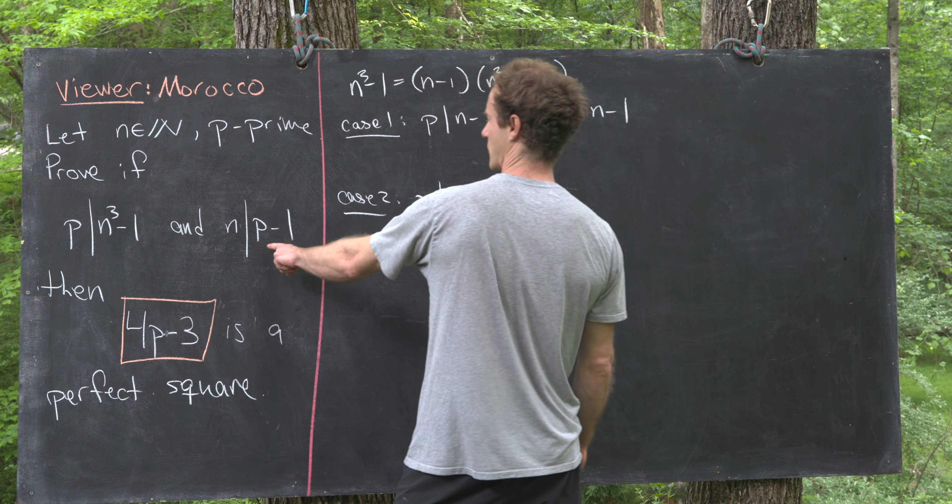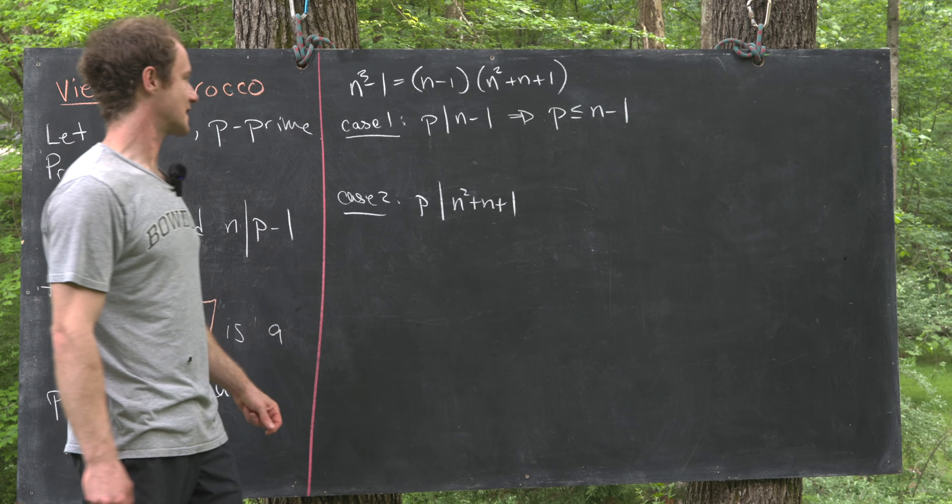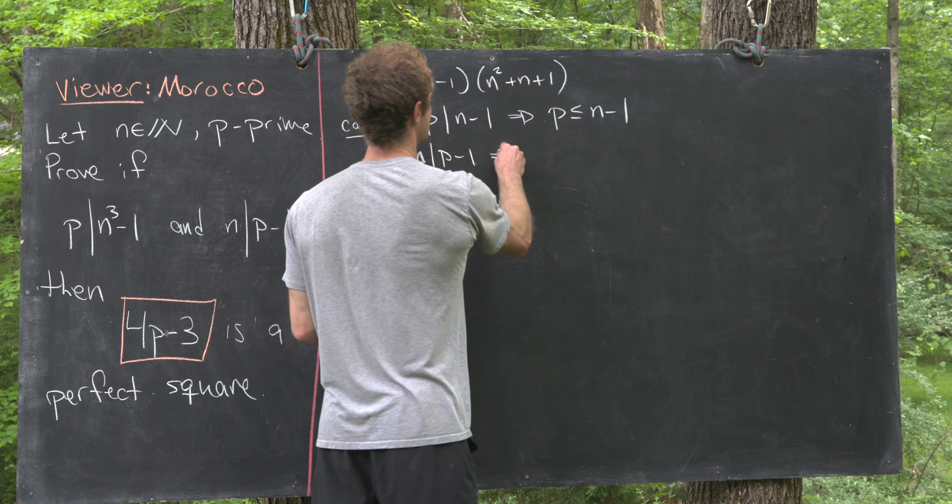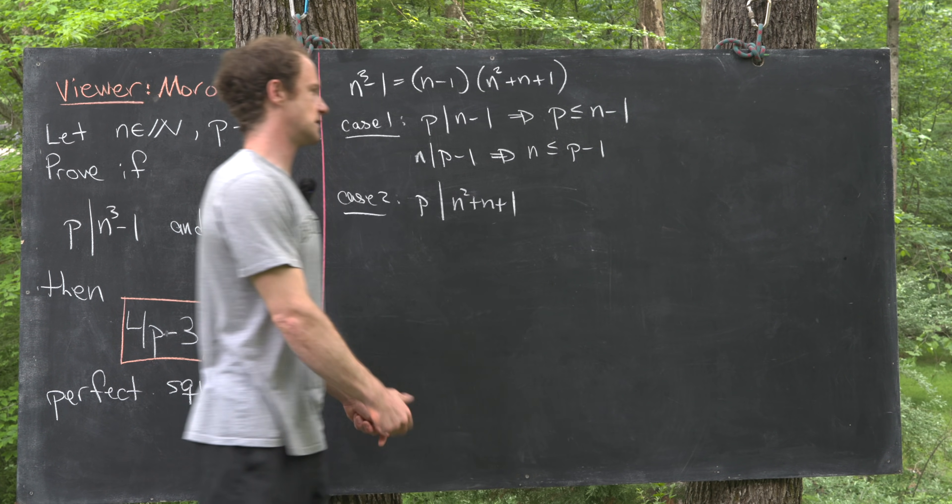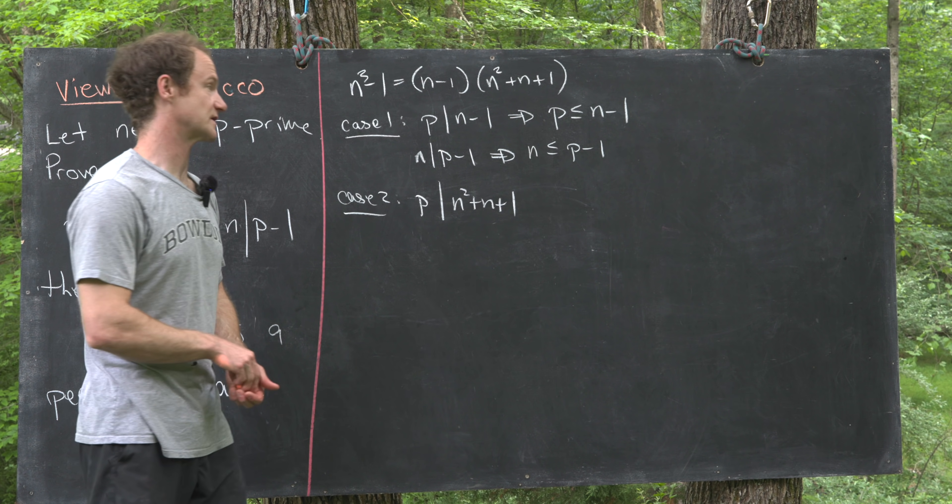But that combined with this condition that n divides p-1 is problematic, because notice that n divides p-1 tells us that n is less than or equal to p-1. But now we can put those together and see that this doesn't really work.